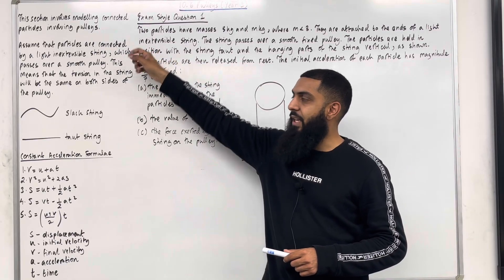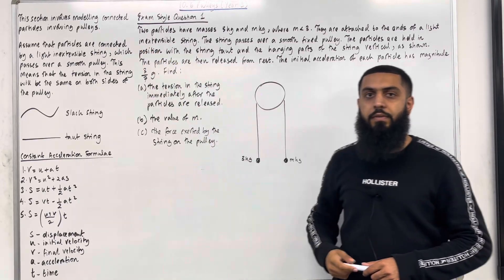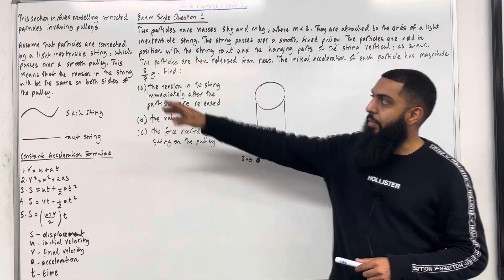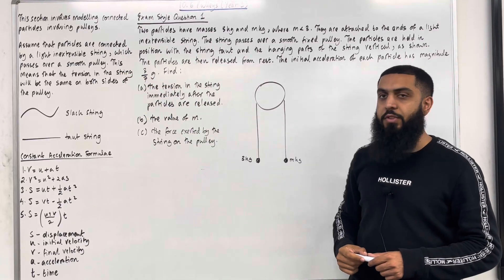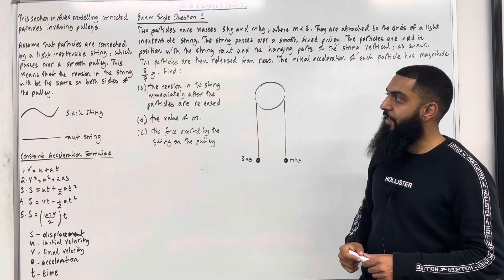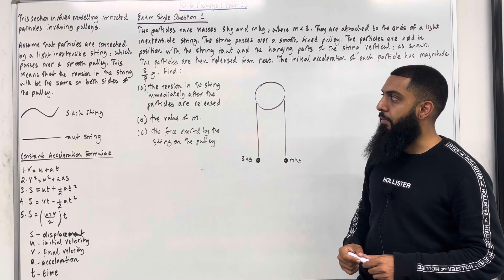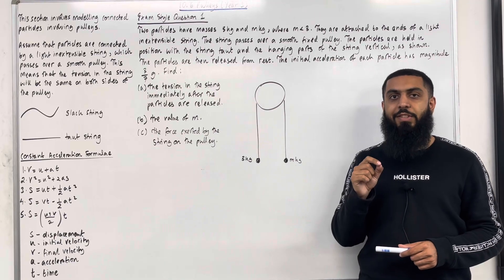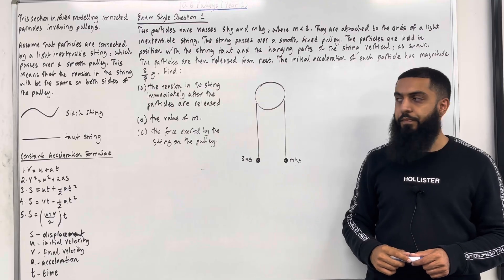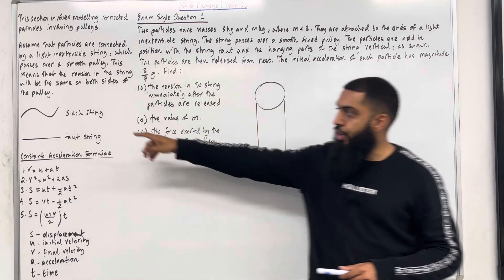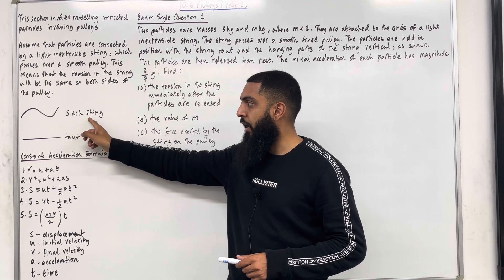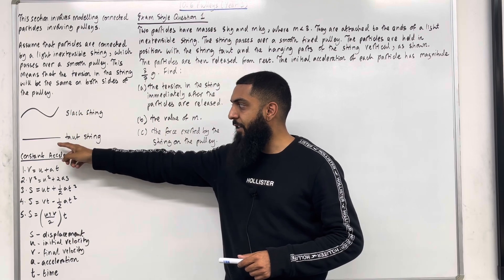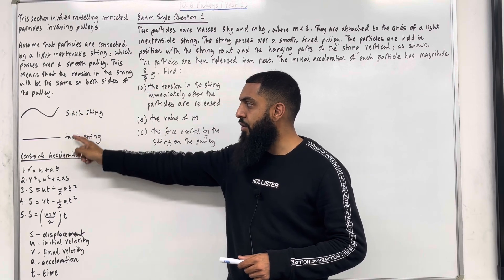This section involves modelling connected particles involving pulleys. Assume that particles are connected by a light and inextensible string which passes over a smooth pulley. This means that the tension in the string will be the same on both sides of the pulley. A smooth pulley also means that there is no friction on the pulley. A string that has not been stretched is called a slack string; a string that has been fully stretched is called a taut string.